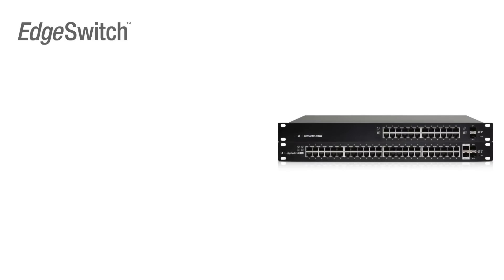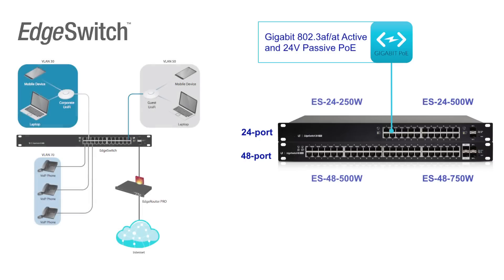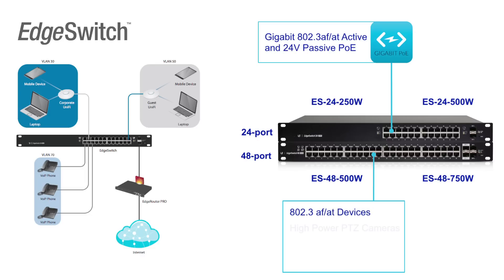The four Edge Switch models give you a choice between 24 or 48 ports of Gigabit PoE Plus power, which means you can power all your 802.3af and AT devices. You can power your high-power 802.11ac access points, or even all your 24-volt passive PoE devices that you may already have.